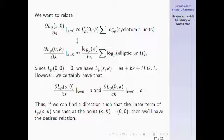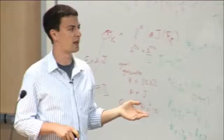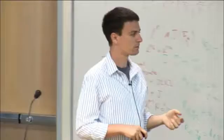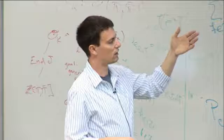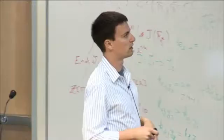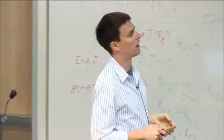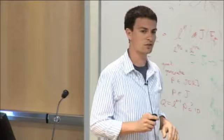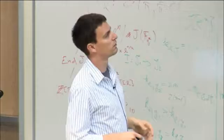Since the function vanishes at the origin, I can write it as A·s + B·k plus higher order terms. The partial with respect to s at the origin is A, and the partial with respect to k is B. If I can find a direction where the linear term vanishes — a line where I have a double zero — then I'll have a relationship between A and B. And A and B are the things we want to relate. So what Ralph and I have been working on is finding this direction where you have a double zero — that's really the meat of what we've done.